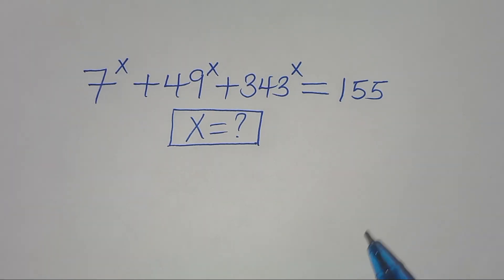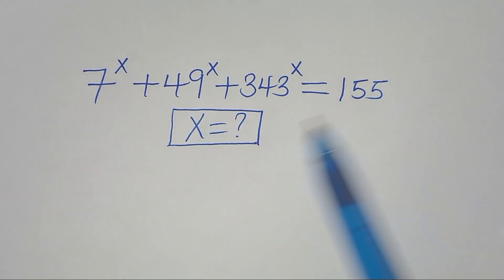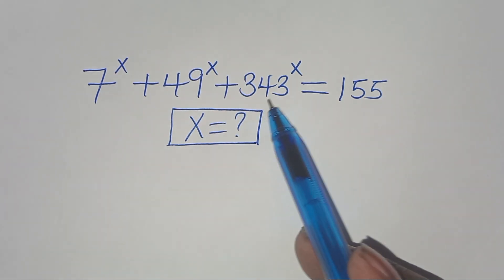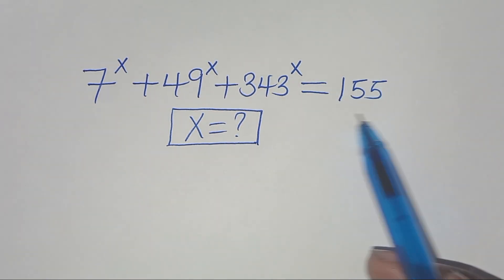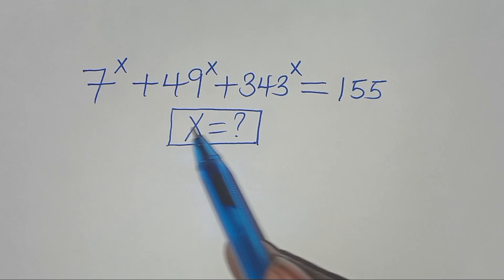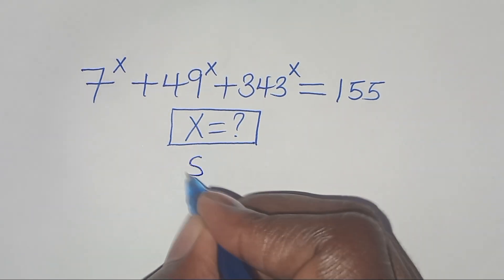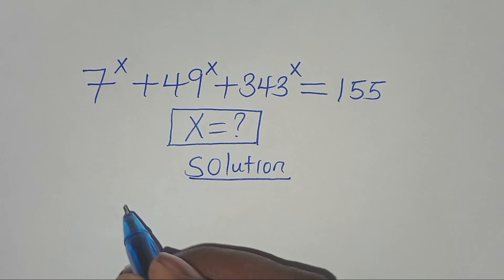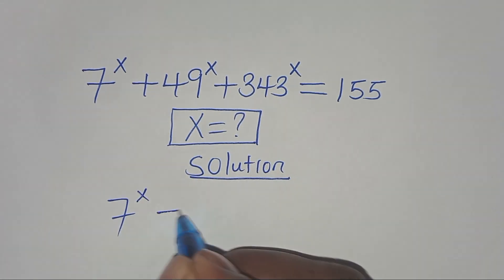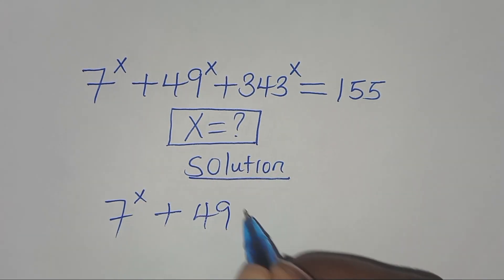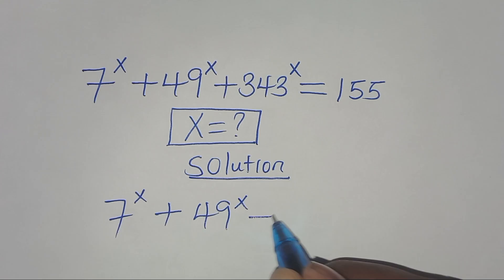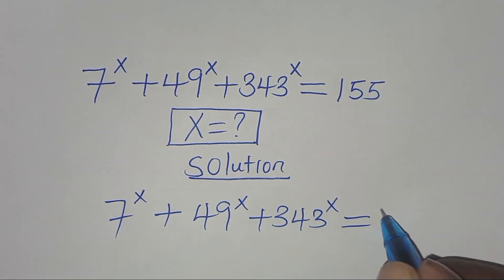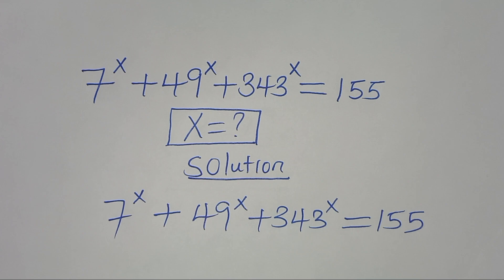Hello everyone, you're welcome to solve this nice math problem: 7 to the power x plus 49 to the power x plus 343 to the power x, this is equal to 155. What is the value of x? Now let's present the solution. From here we have 7 to the power x plus 49 raised to the power x plus 343 raised to the power x, this is equal to 155.